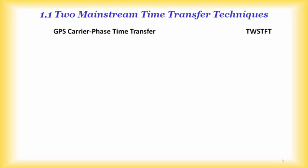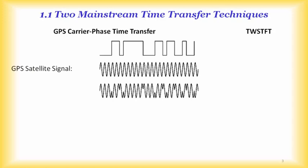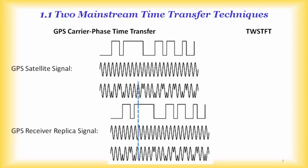Two popular time transfer techniques are GPS carrier phase time transfer and two-way satellite time and frequency transfer (TWSTFT). For GPS carrier phase time transfer, the GPS satellite transmits a signal — essentially a carrier wave with coding. The receiver generates a replica signal, and by measuring the phase difference between the received satellite signal and the replica, we can determine the time difference between the GPS satellite clock and the GPS receiver time.